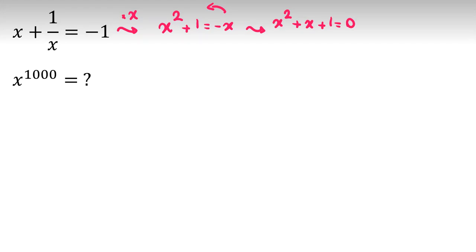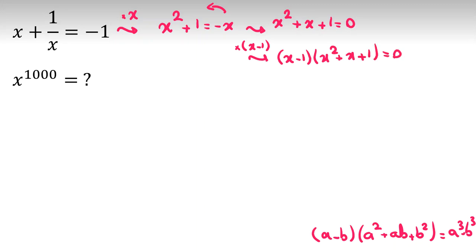Now I want to use a famous identity that a minus b times a squared plus ab plus b squared equal to a cubed minus b cubed. And here if I multiply both sides by x minus 1, then I have x minus 1 times x squared plus x plus 1 equal to 0. And if you use the identity, this identity it will be x cubed minus 1 equal to 0, so we conclude x cubed equal to 1.